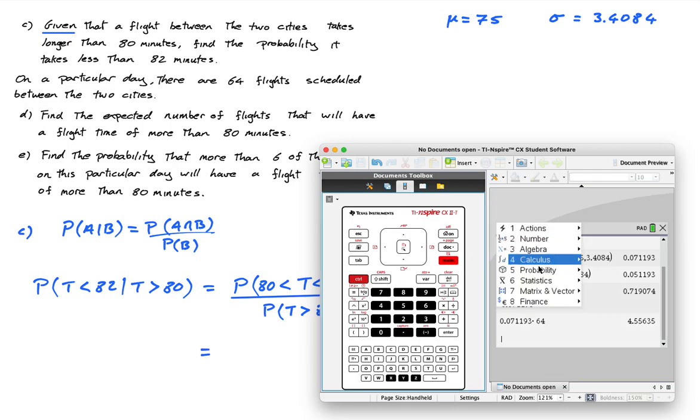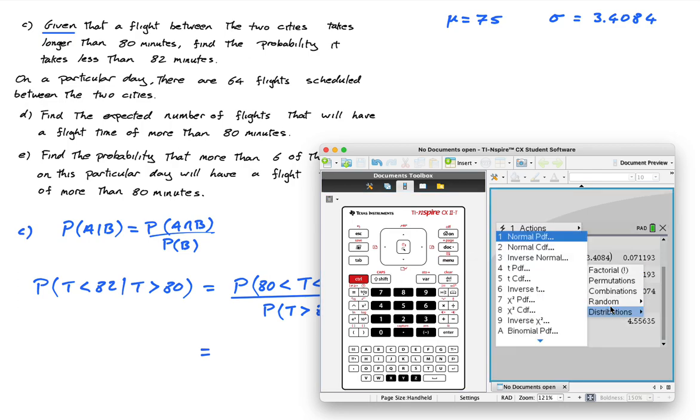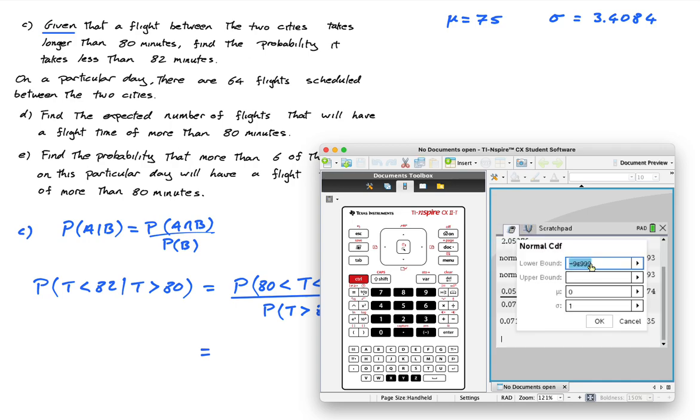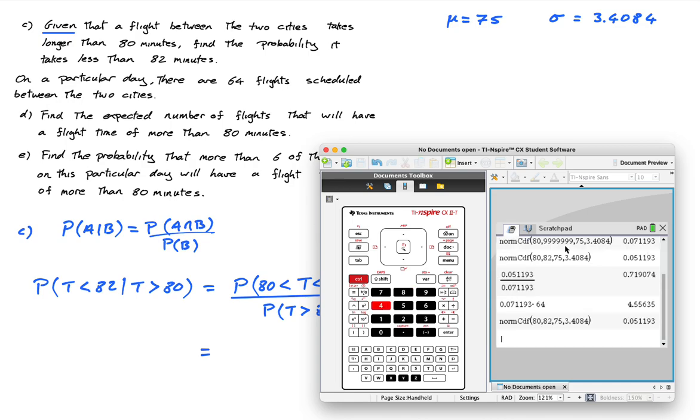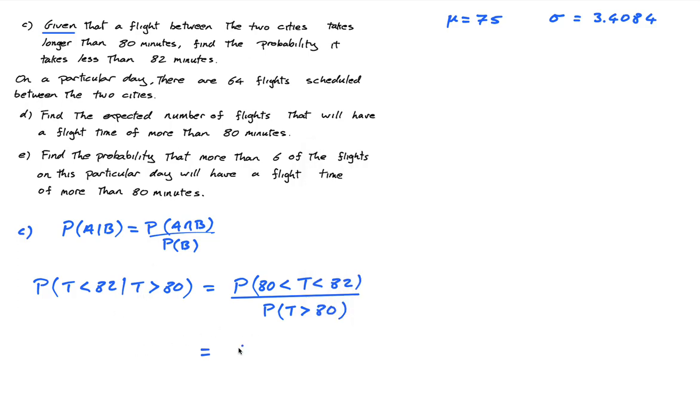I'm going to press menu, probability distributions, normal CDF, lower bound 80, upper bound 82, the mean is 75, and the standard deviation is 3.6084. Press enter and I get 0.051193.